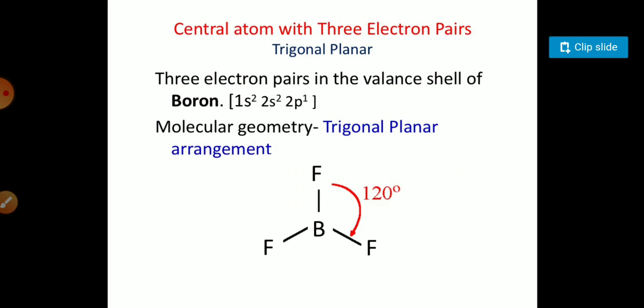The central atom with three electron pairs has a trigonal planar structure. The element boron has three bond pairs, three electron pairs, and the angle between these is 120 degrees with trigonal planar arrangement.